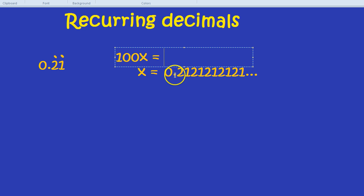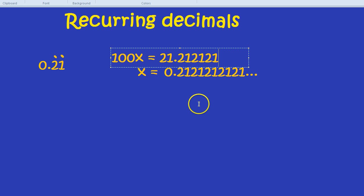If we multiplied it by 10, it would be 2.1212121. But multiplying it by 100, we get 21.212121, etc. Now why did we do that?